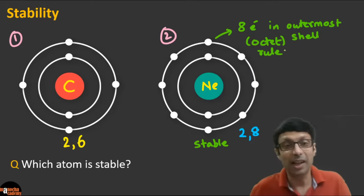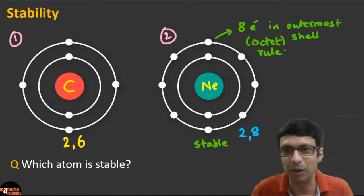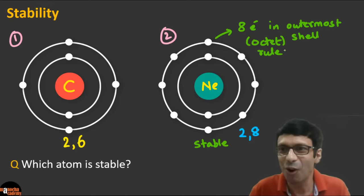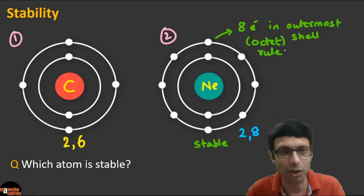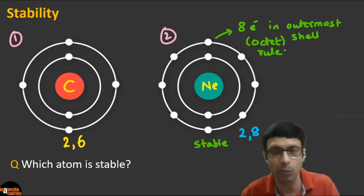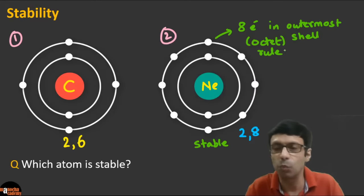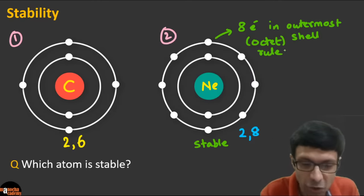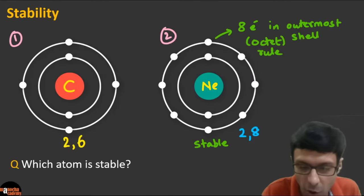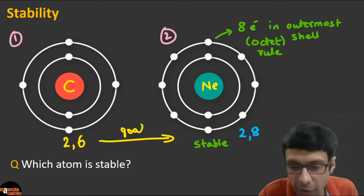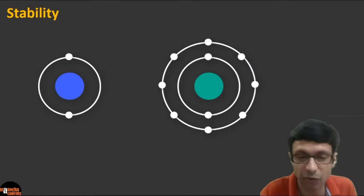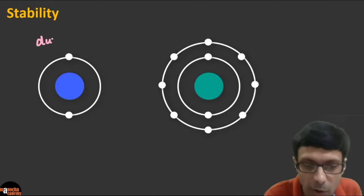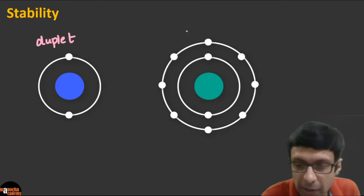The stability in chemistry is decided by the electron arrangement. The rule is: an atom is stable because it has eight electrons in its outermost shell. This is called the octet rule in chemistry — just like seven is the magic number in Harry Potter, eight is the magic number here. Carbon wants to combine with others to become more stable; its goal is to get to eight electrons — the octet state.